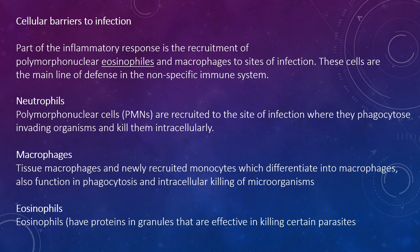Looking at cellular barriers to infection: part of the inflammatory response is the recruitment of polymorphonuclear cells, eosinophils, and macrophages to the sites of infection. These cells are the main line of defence in the non-specific immune system and include neutrophils, macrophages, NK cells, lymphocytes, activated killer cells, and eosinophils.